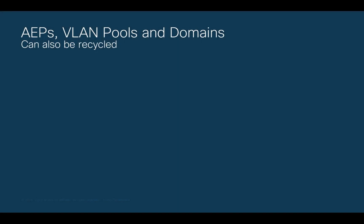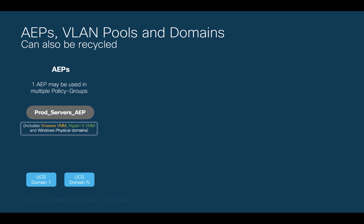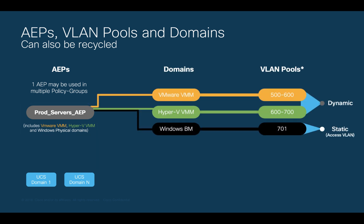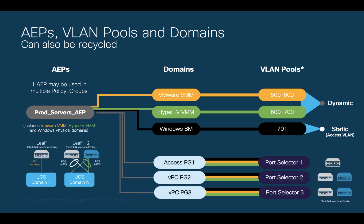As you would expect, you can also recycle domains, AEPs, and VLAN pools. Let's show a quick example to put everything together. Let's think you have all your production servers running on VMware, Hyper-V, and Bare Metal on different blade server enclosures all across your network. Instead of creating the same network configuration multiple times, you just have to define the AEP once, including all three domains and VLAN pools, and then you can reuse all of them by attaching the same AEP to any access, VPC, or port channel policy group you may need. In this case, you end up with three different connections using the same AEP — one access policy group and two VPC policy groups. But this could potentially be hundreds or even thousands of connections using the same configuration you had to create only once.